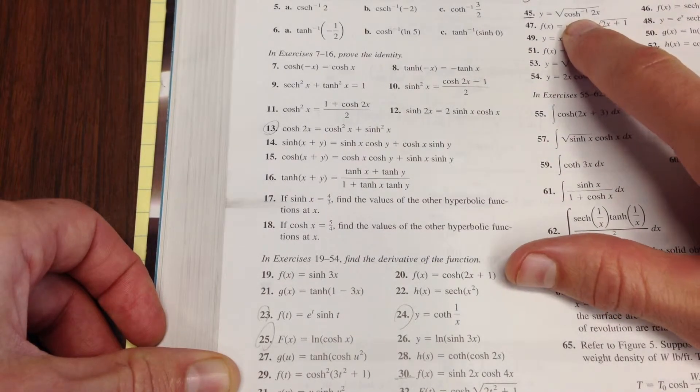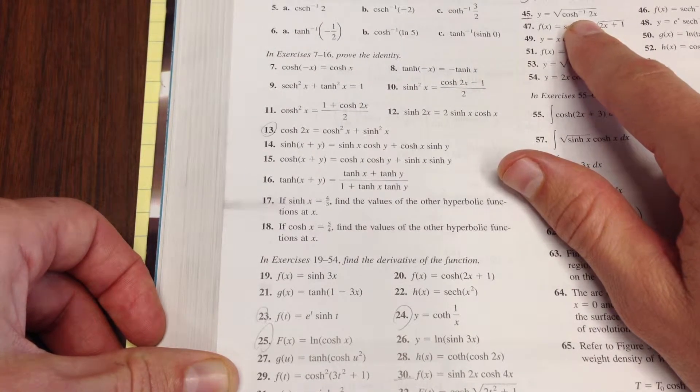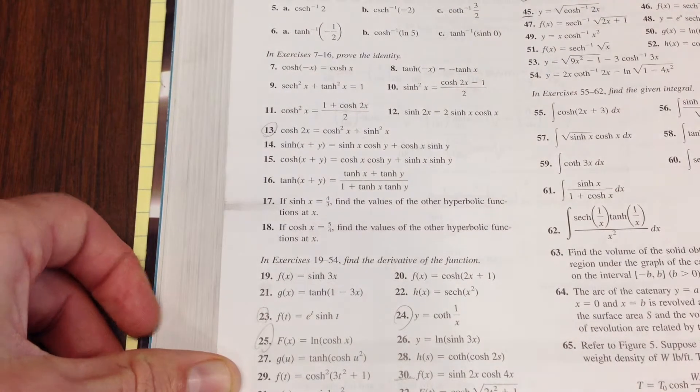And then let's work this problem too. Problem 45 says y equals the square root of cosh inverse of 2x. So, let's get started.